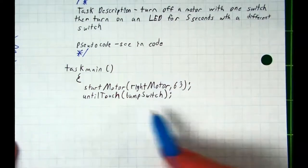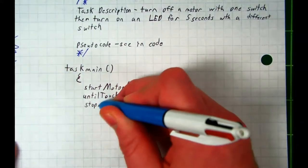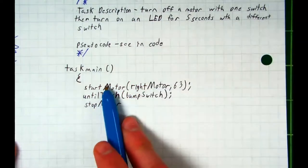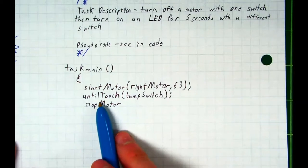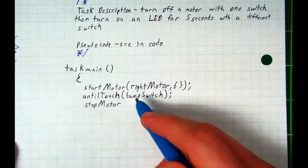What happens when we touch the first switch? Turns off the motor. That is written as stopMotor—no spaces, capitalize the M. And of course that makes sense: startMotor turns it on, stopMotor turns it off.